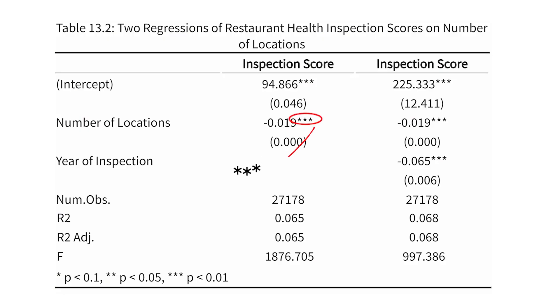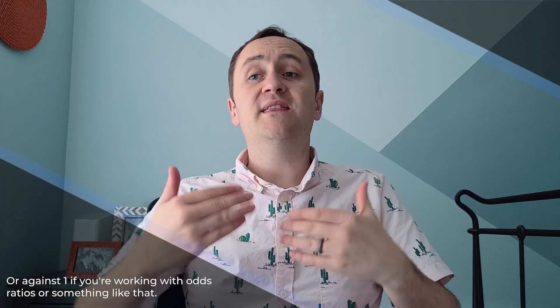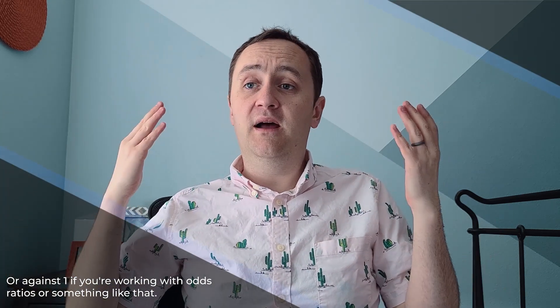The other thing we see here is those stars — those asterisks. Those are called significance stars, and they are very commonly shown on regression tables. In this case we see three of them. These are representations of the p-value — the probability of getting a result this extreme or more extreme given a certain null hypothesis value. By default in pretty much all regression tables, the null hypothesis we are testing against is that this coefficient is zero.